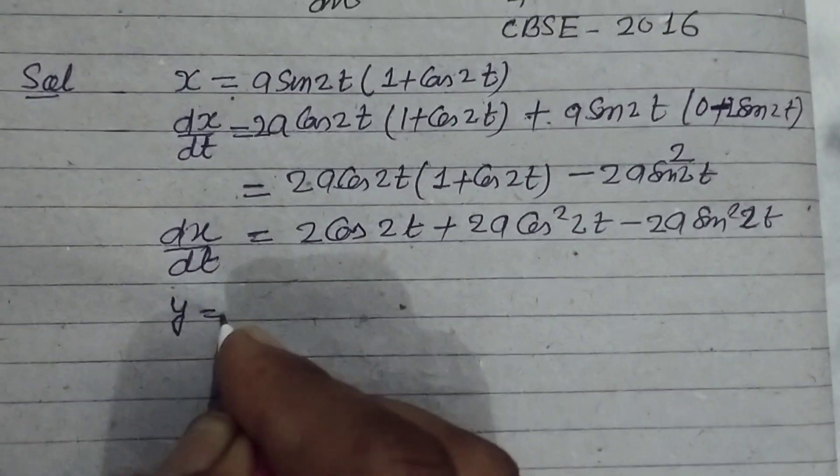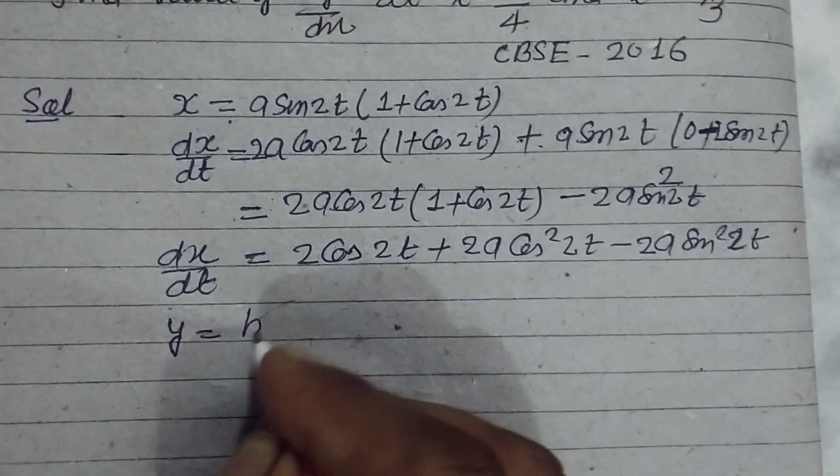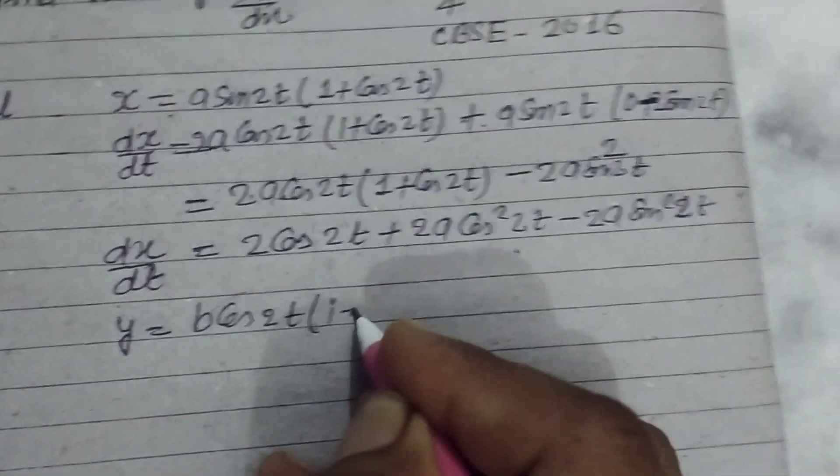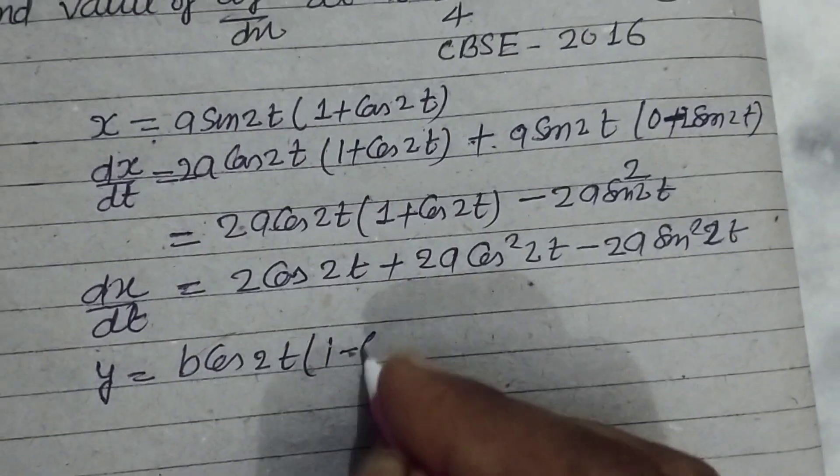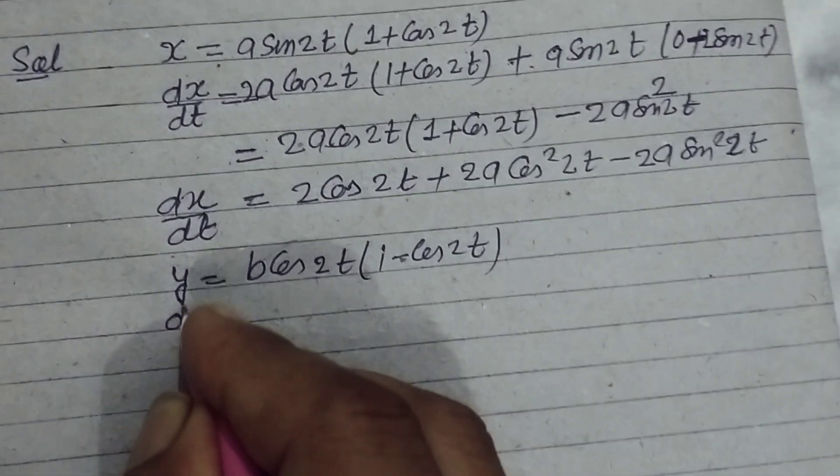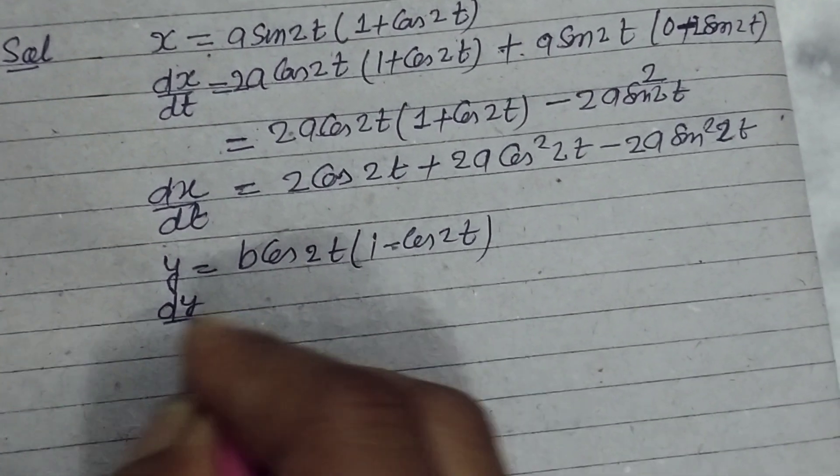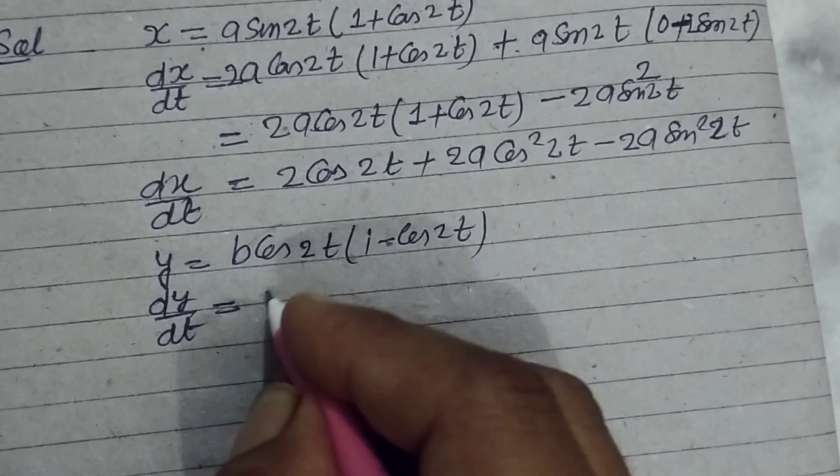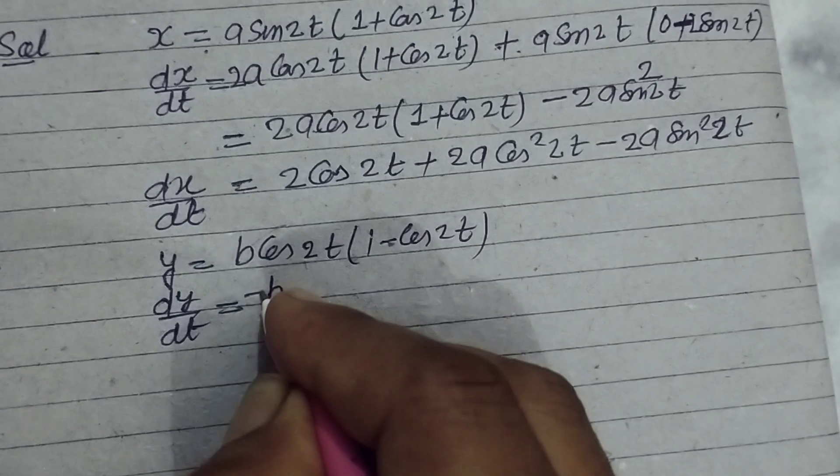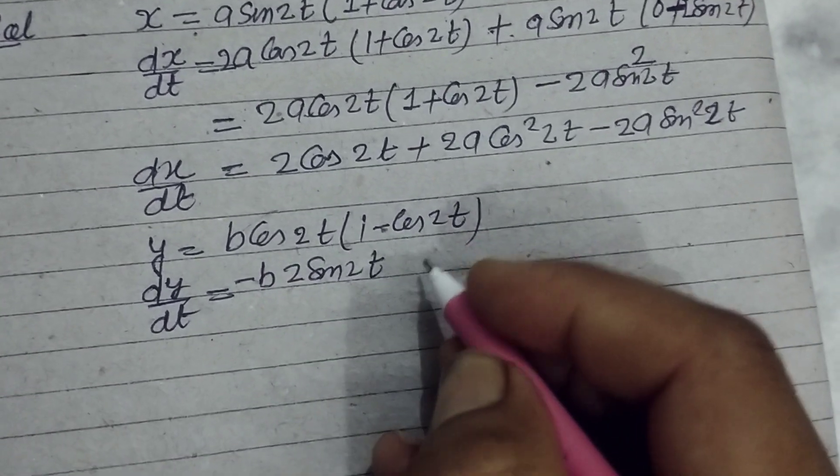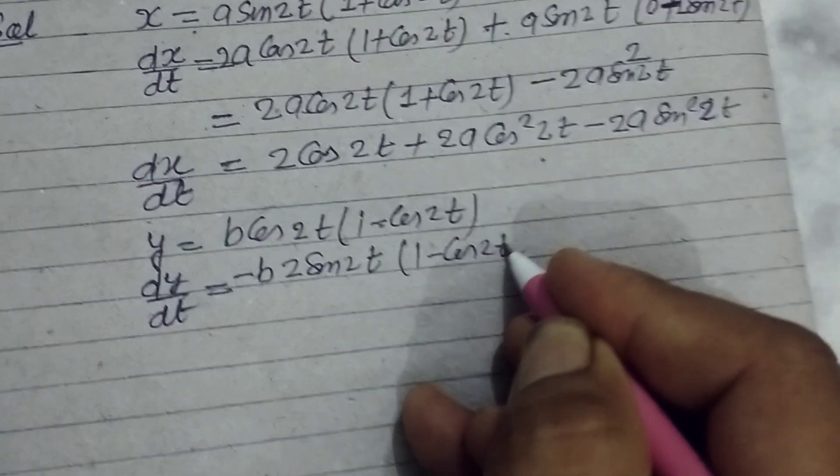Now y = b cos 2t (1 - cos 2t). Differentiating with respect to t, dy/dt: first we take the differentiation of cos 2t which is -2 sin 2t, times (1 - cos 2t).